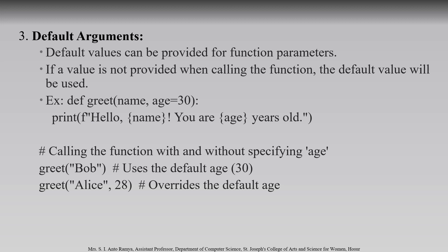Next is default arguments. If by default you want to pass any value to a function, you can do that. For example: 'def greet(name, age=30): print("Hello", name, "you are", age, "years old")'. Calling 'greet("Bob")' — there are two parameters but we are passing only one value, so the second parameter takes the default value 30. Output: 'Hello Bob you are 30 years old'. If we call 'greet("Alice", 28)', it will not take the default value but will use 28 instead. Output: 'Hello Alice you are 28 years old'.